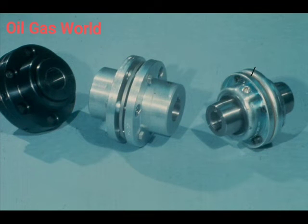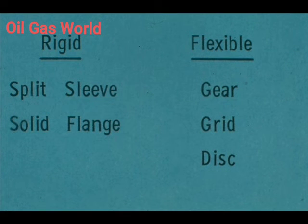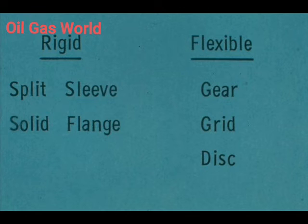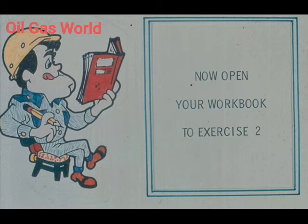As with the rigid couplings, there is an endless variety of flexible couplings on the market. However, you'll find that most of them are variations of the basic types shown here. There are two basic classes: rigid and flexible. The two basic rigid couplings are the sleeve and the solid flange. The three basic types of flexible couplings are the gear, grid, and disc couplings. We'll be back to tell you more about rigid couplings after you complete exercise two in your workbook.